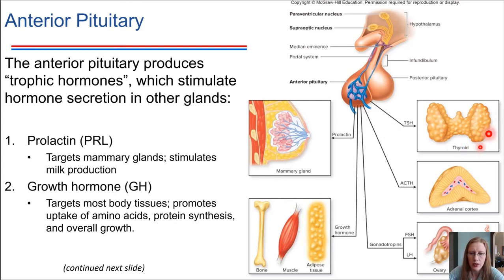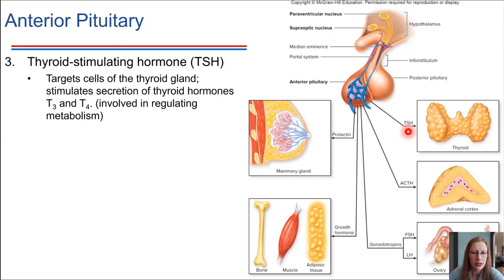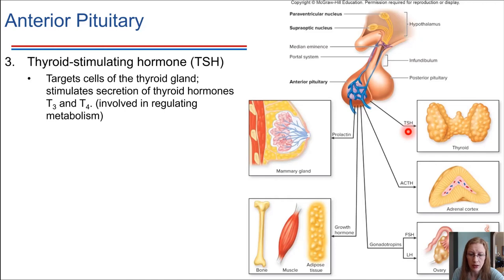Next up, we've got thyroid stimulating hormone. This is a hormone that influences what the thyroid is doing. The thyroid is a gland in your neck, and it secretes thyroid hormones T3 and T4. We've seen these already when we were talking about nonpolar hormones — how they can cross the plasma membrane and activate gene transcription inside of the cell. Thyroid stimulating hormone is what causes T3 and T4 to be released from the thyroid, coming from the pituitary gland.